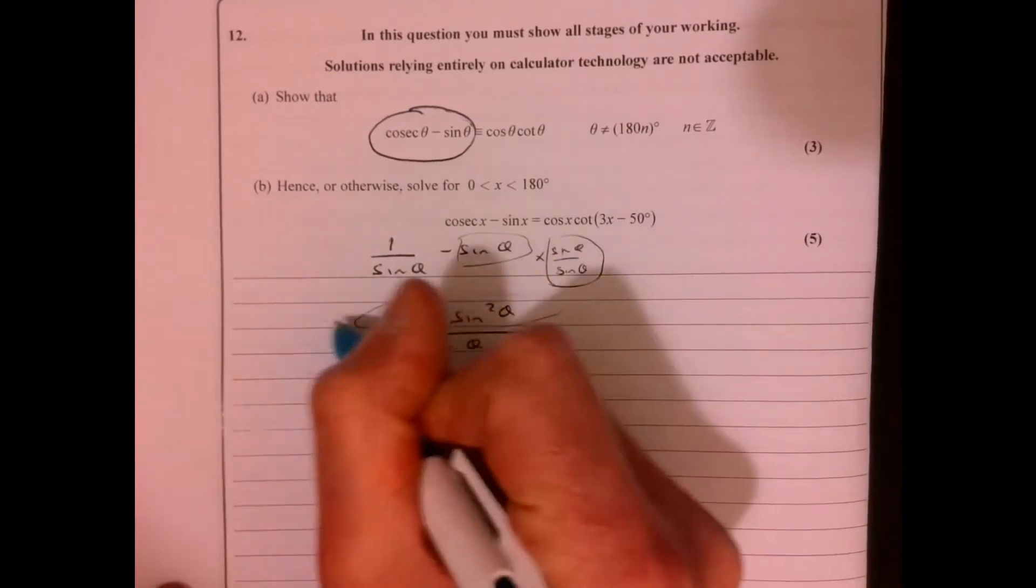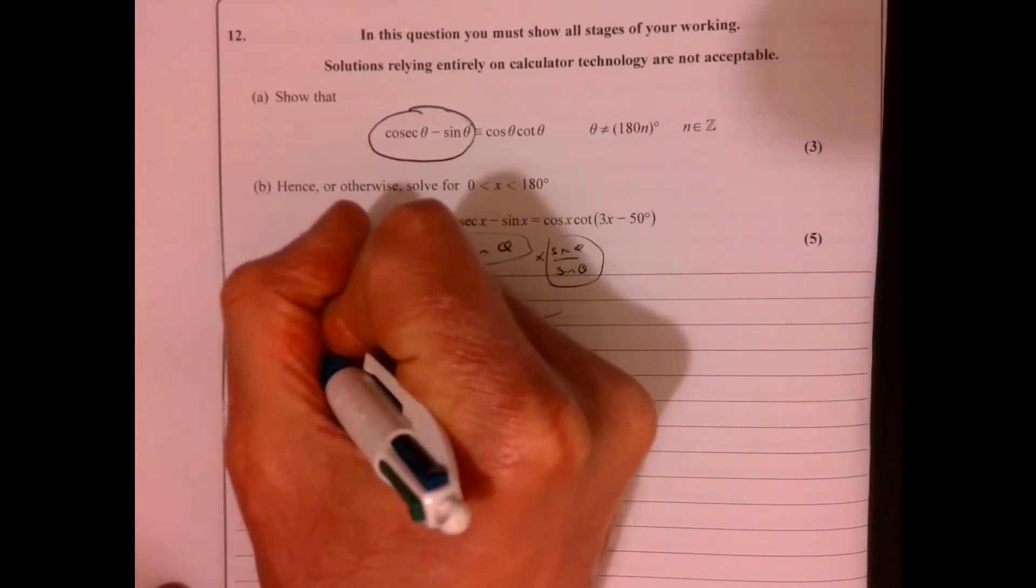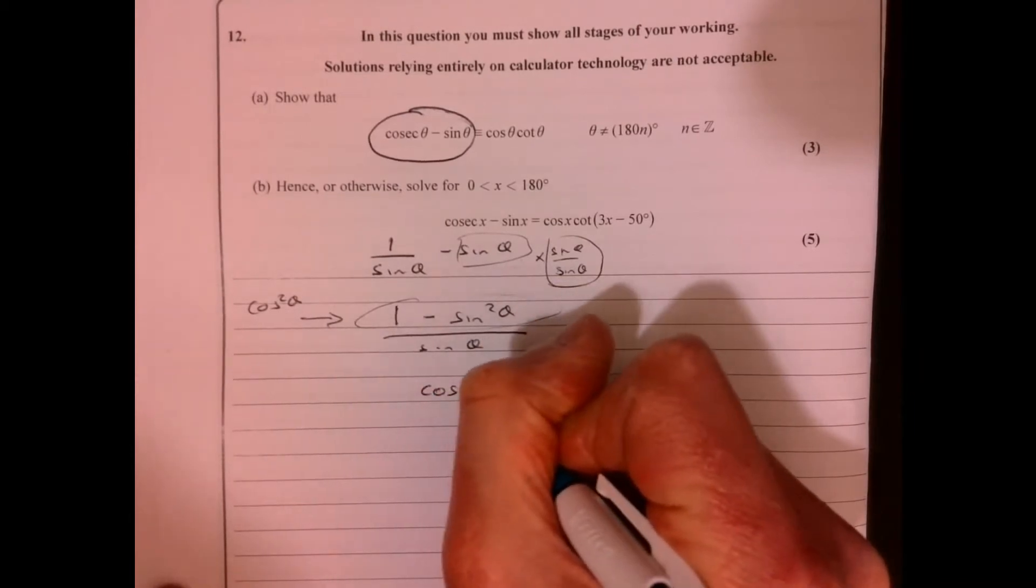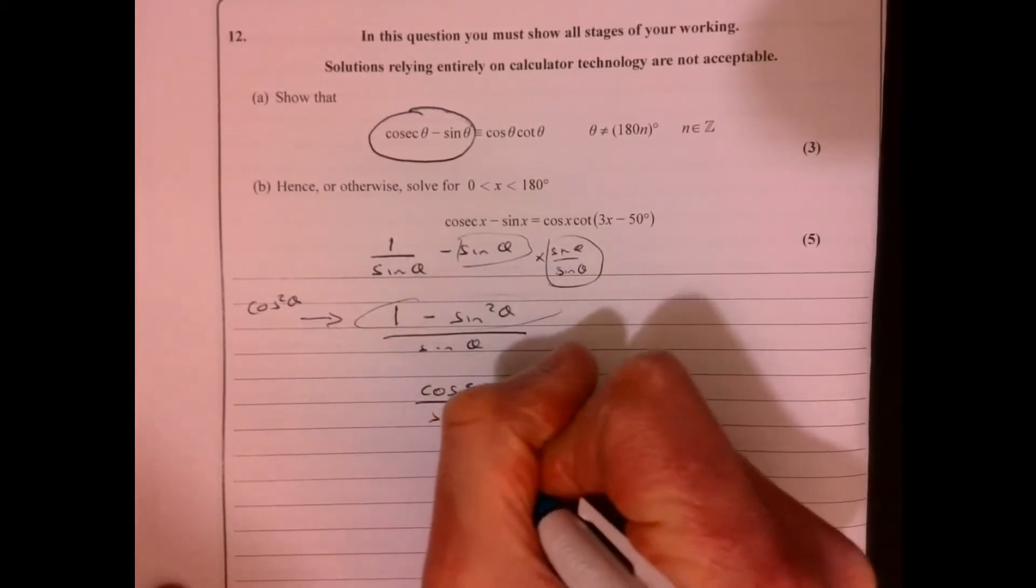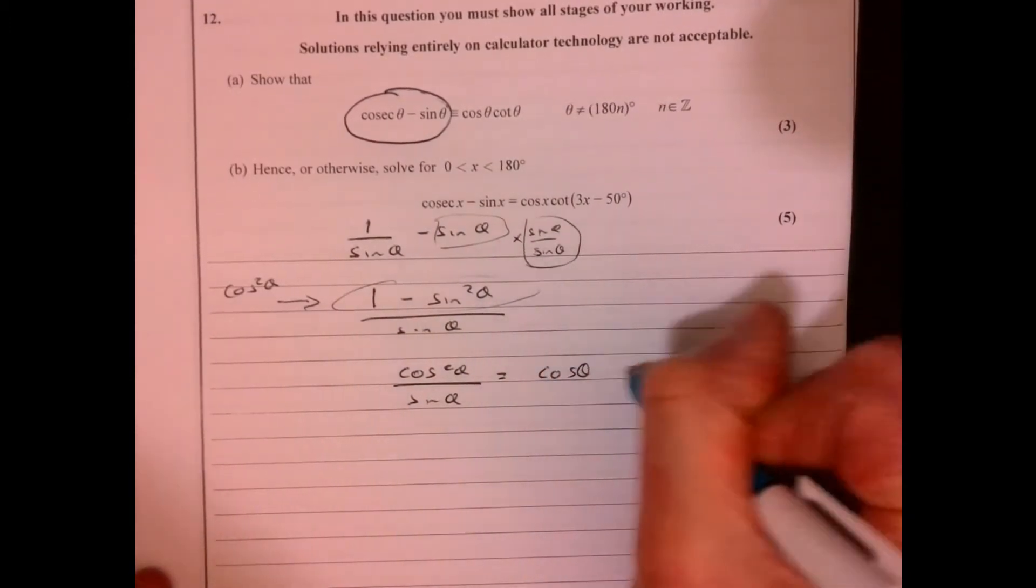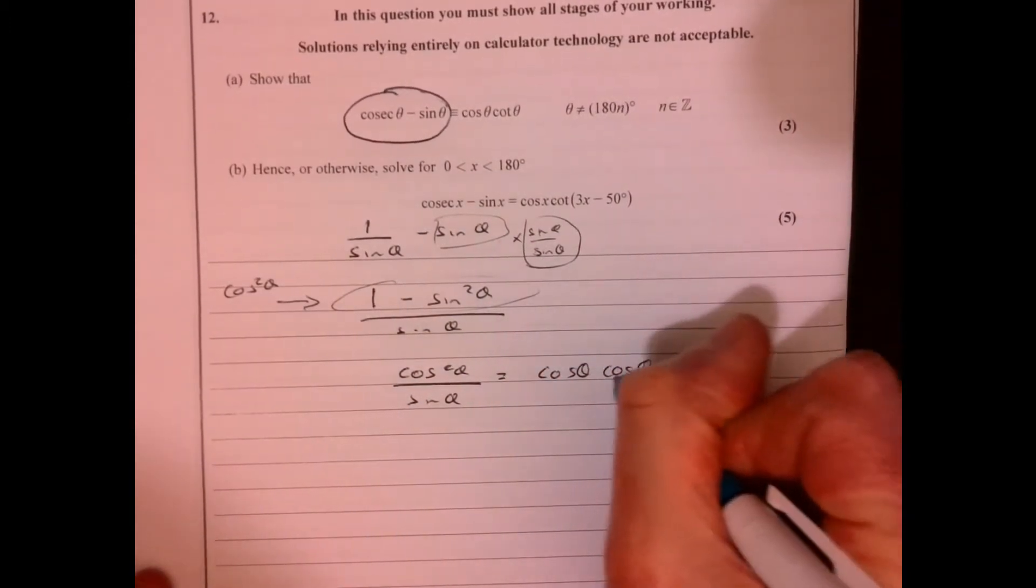What's that? That is cos squared theta. So we can write cos squared theta over sin theta. Well, let's just write it like this. Cos theta times cos theta over sin theta.